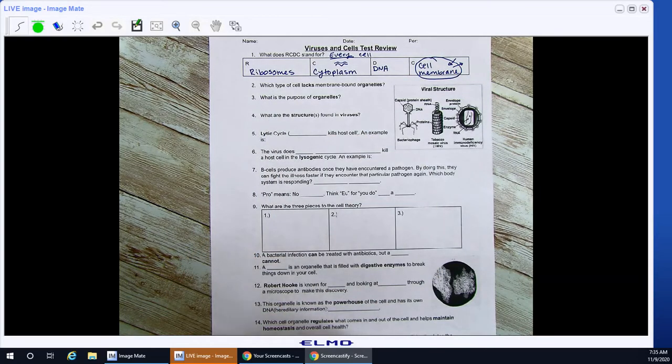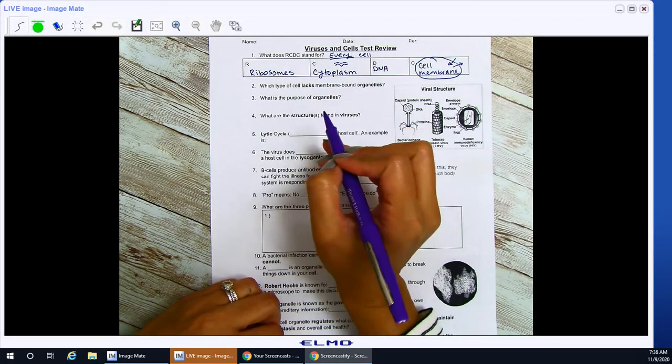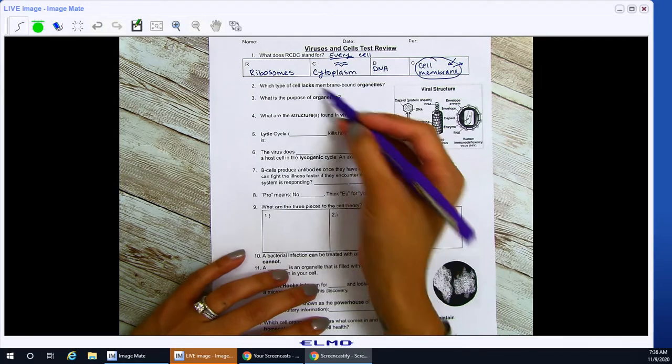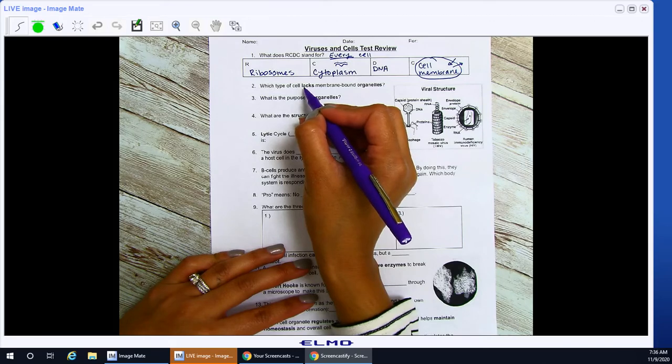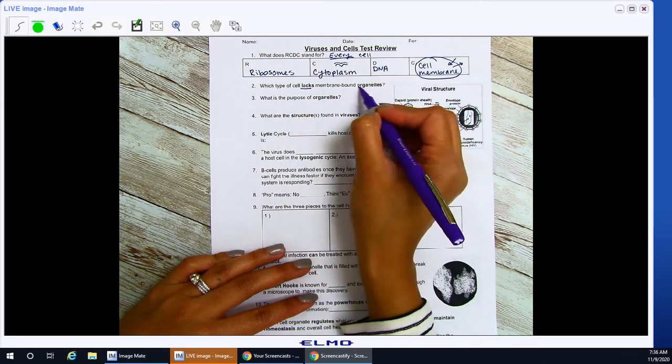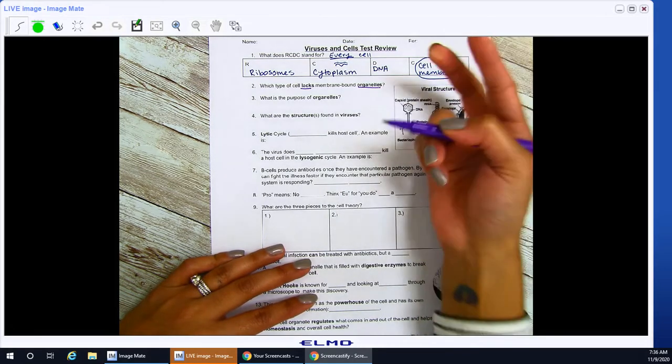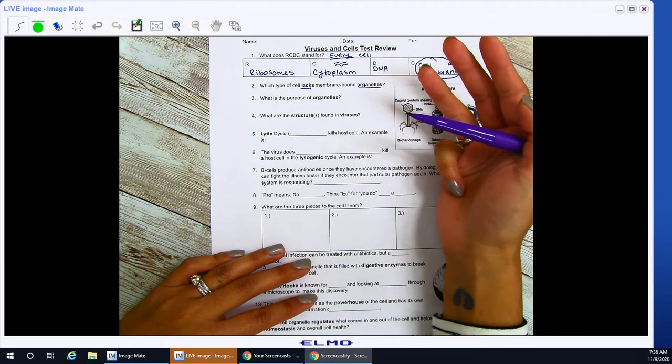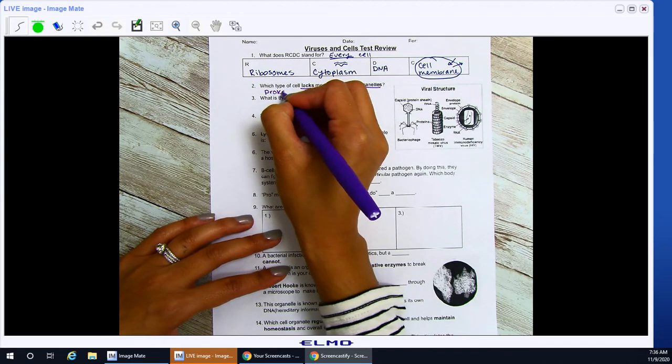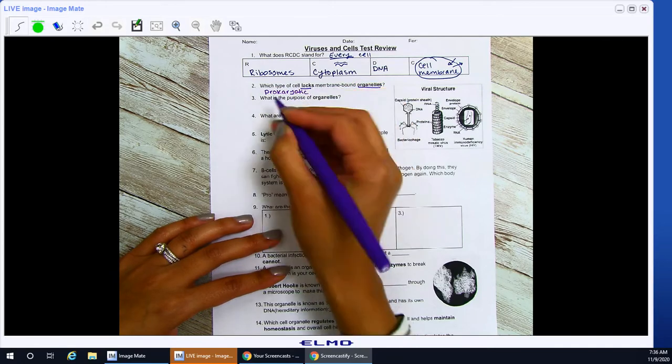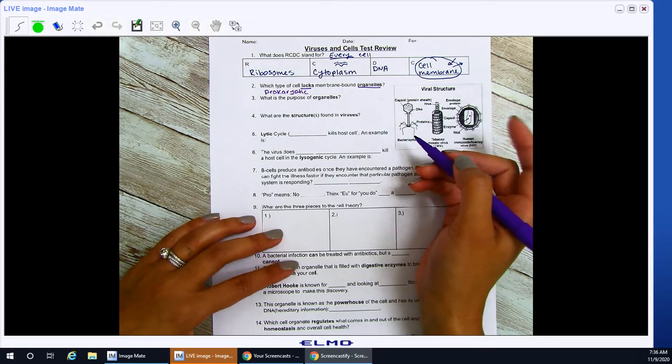Number two, which type of cell lacks? The word lacks means does not have. Which type of cell does not have any membrane-bound organelles? Remember, membrane-bound means it's inside your membrane. Okay, so which one, key words, I have already bold-faced them for you. Which type of cell does not have organelles? Organelles are little organs, such as ribosomes, the Golgi, the endoplasmic reticulum. This one is going to be your prokaryotic cells. Remember that pro means no. It does not have a nucleus. It does not have any fancy structures.